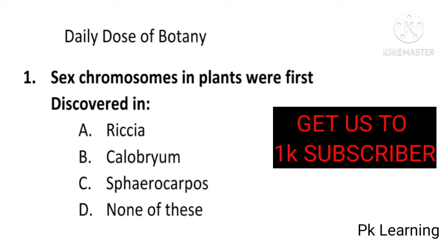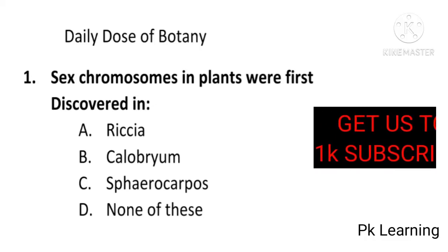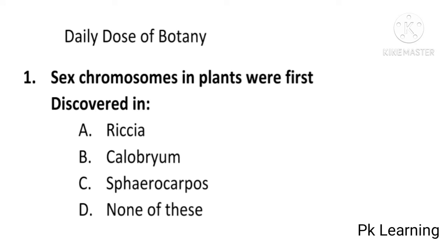Hello viewers, welcome to PK Learning. Let's start the 5 MCQs of the daily dose of botany. First question: sex chromosomes in plants were first discovered in Risia, Calabriam, Sphaerocarpos, or none of these? The answer is C — Sphaerocarpos.